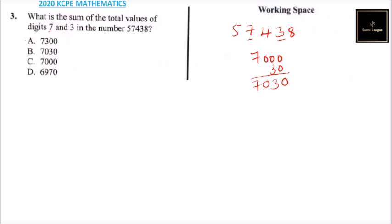Looking at our answers: A is not correct, B is correct, C is not correct, D is not correct. So the correct answer is A, and that's how you answer that question.